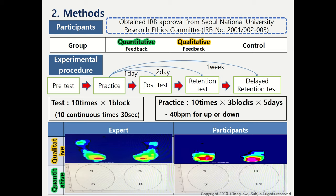Participants consisted of adult men who had no trouble performing their tasks. This study was approved by Seoul National University Research Ethics Committee. Each group consists of 10 males: quantitative, qualitative, and control groups.